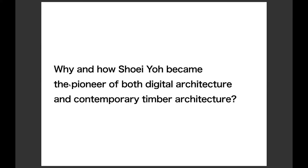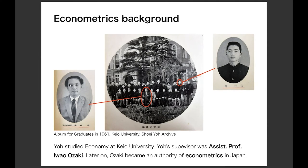Why and how did he achieve this? To understand this, I am conducting historical research on the life and works of Shohei Yo based on documents in the archive. Educational background was very important. Yo studied economics at Keio University, not architecture, and his supervisor was Dr. Iwa Ozaki, who later became an authority of econometrics in Japan. Under Ozaki's guidance, Yo learned the potential of the computer. As Greg Lynn pointed out, this background may be one reason why he became a pioneer in digital design.